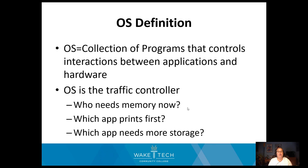An operating system is a collection of programs that handles the processes between the hardware and the applications the user is using. It's important to remember that the user generally isn't interacting directly with the operating system — they're interacting with software that might be telling the OS to do something, like creating a new user. The OS is a bit of a traffic controller dealing with applications and demands on the hardware: which application needs to print, which needs the camera, which needs heavy processing for streaming or gaming.